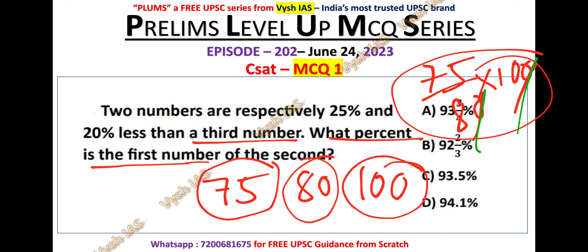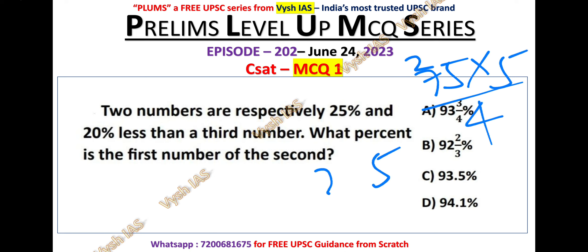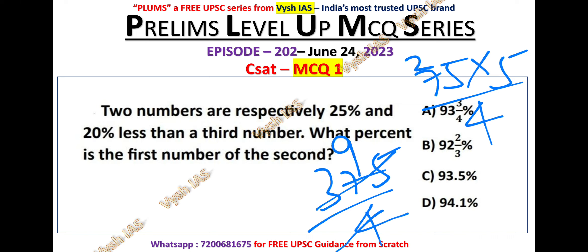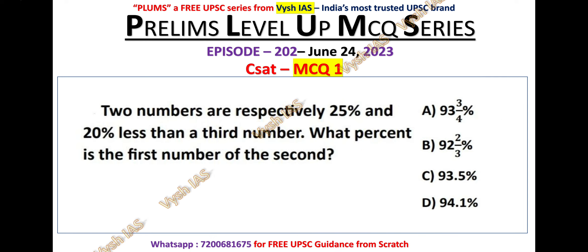If you calculate this, the zeros get cancelled and we simplify: 75 into 5 by 4 equals 375 by 4. That gives 93 point something. In the options all of them have 93 point something, but in the denominator we should get 4. So option A is the correct answer.